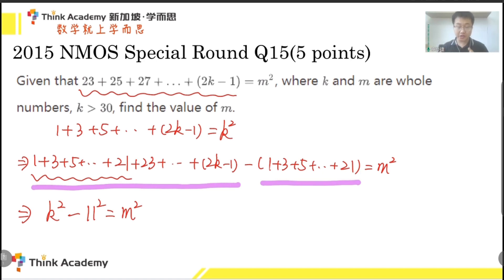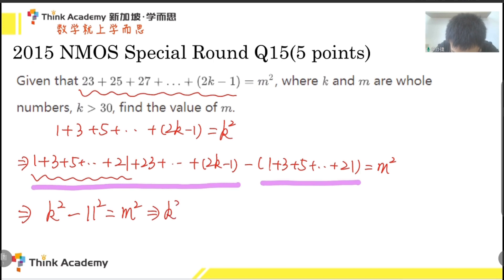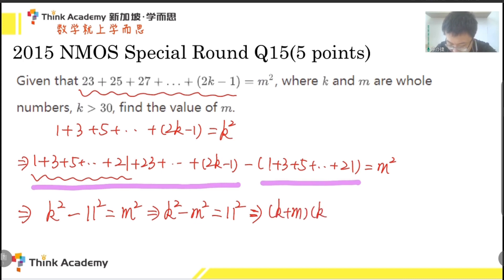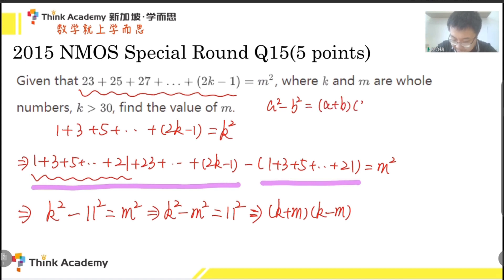Then we can rearrange. When solving a formula, we always put the unknown numbers on the left and the known numbers on the right. So by rearranging, we have k squared minus m squared equals 11 squared. Then we apply the difference of squares formula, changing it into (k + m)(k − m). This equals 11 squared.